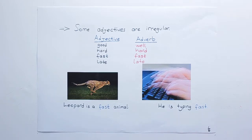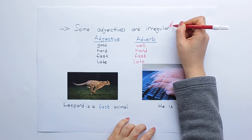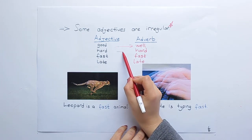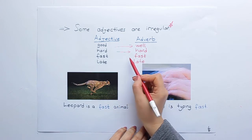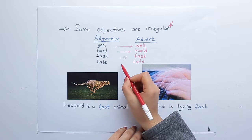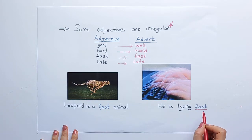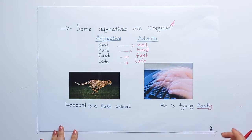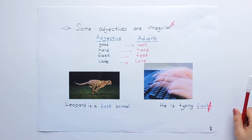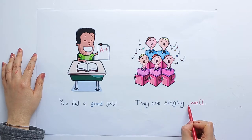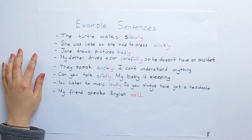The boy is happy. Children are playing happily. Some adjectives are irregular — this is important. Good → well. Hard → hard. Fast → fast. Late → late. A leopard is a fast animal. He is typing fast. Note: we do not say 'fastly.' You did a good job. They are singing well.